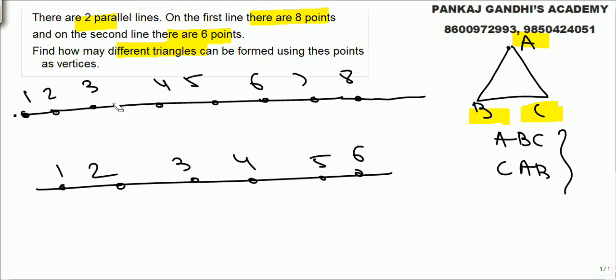Now how do we get a triangle? Obviously, all the three not from this line, it is going to be a line. Neither all the three from here. So either we can select two points from here and one from here.